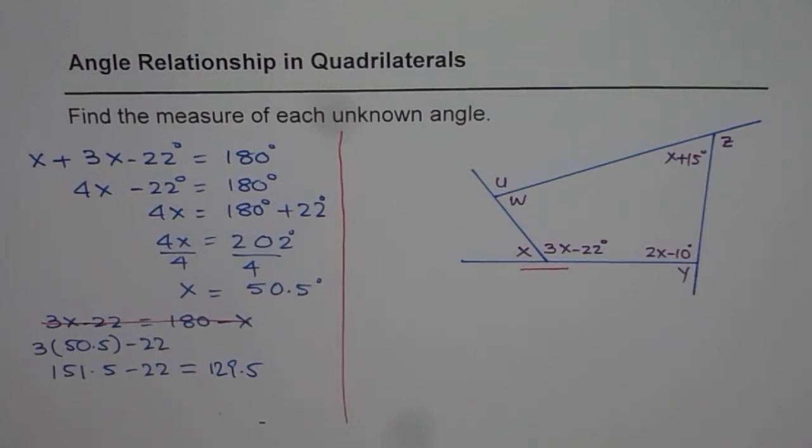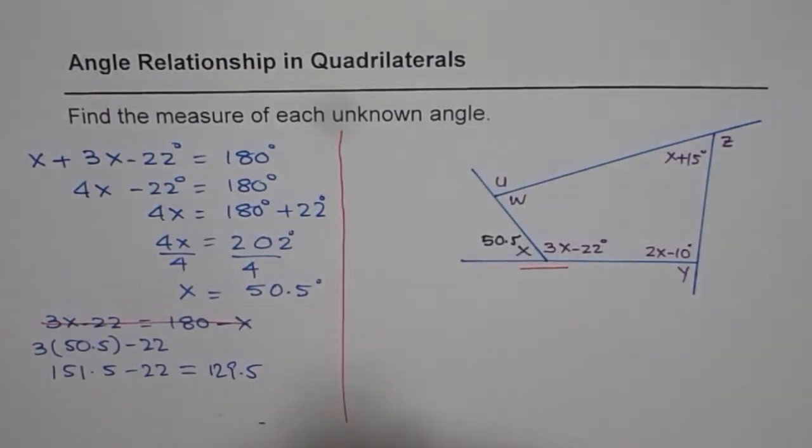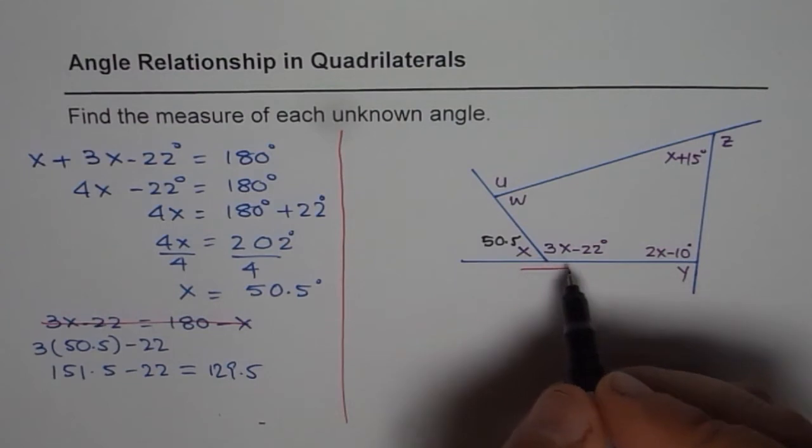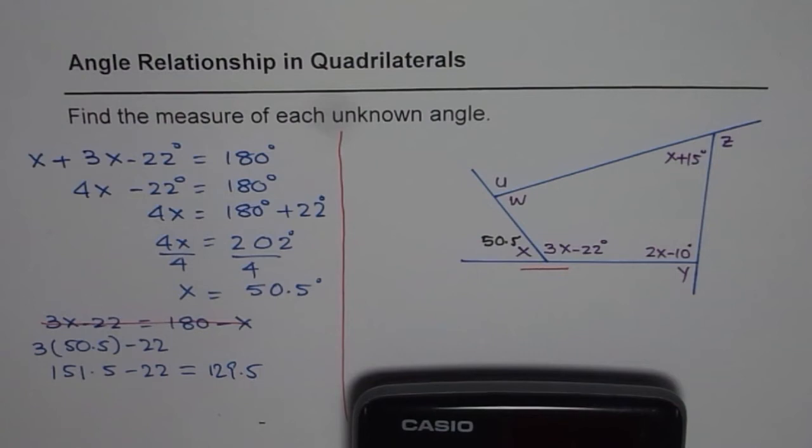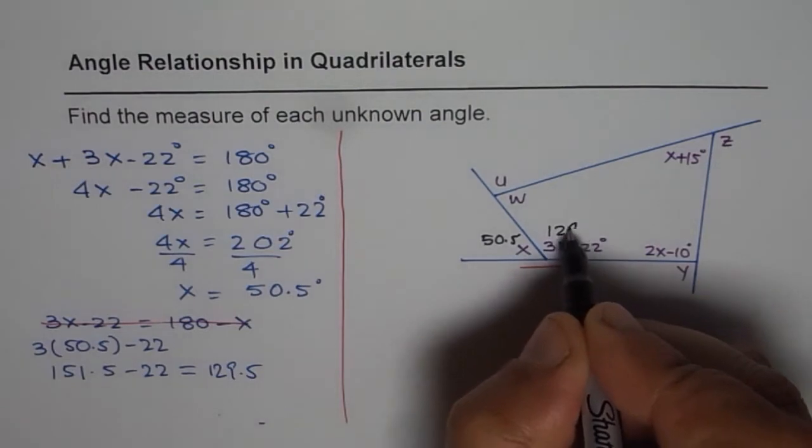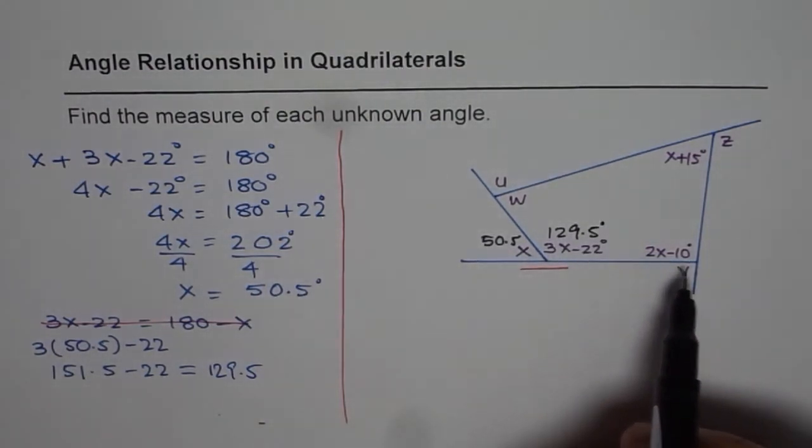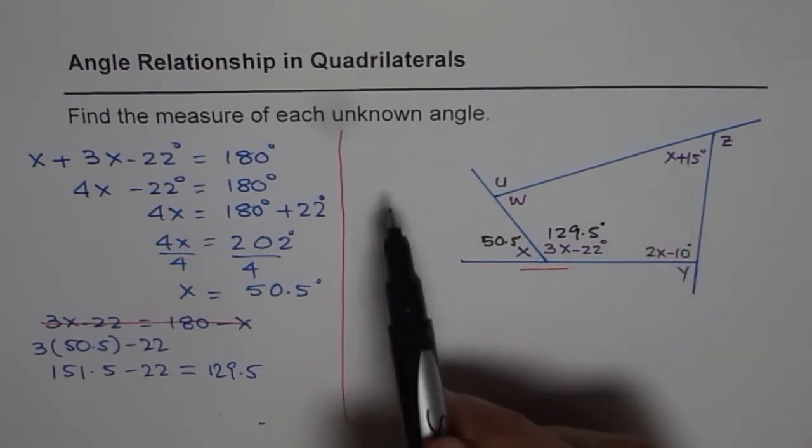Now let me write down these answers for you here. So we have x as 50.5 degrees and we have this angle as 180 minus 50.5. So we could also write directly 180 minus 50.5, which will also give you the same answer. And that is 129.5. So for all other angles, what you can do is you can just substitute the value and find the answer.